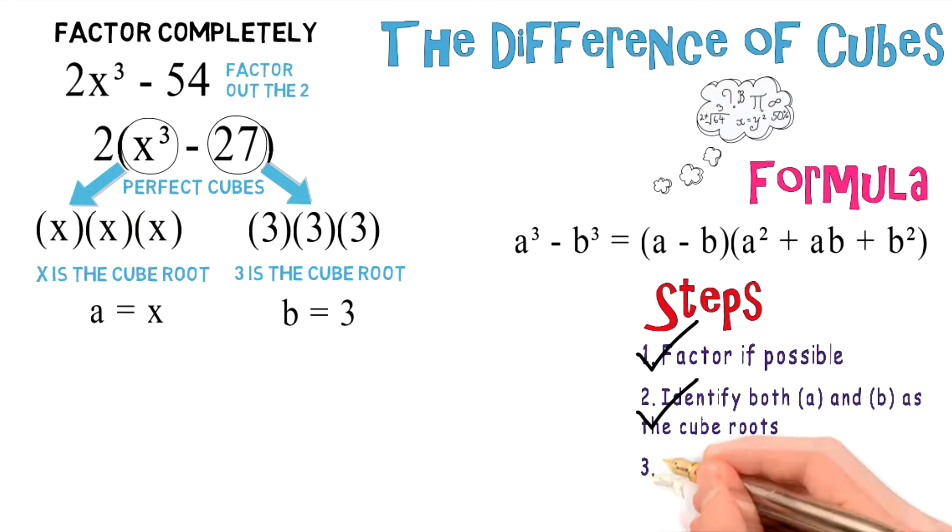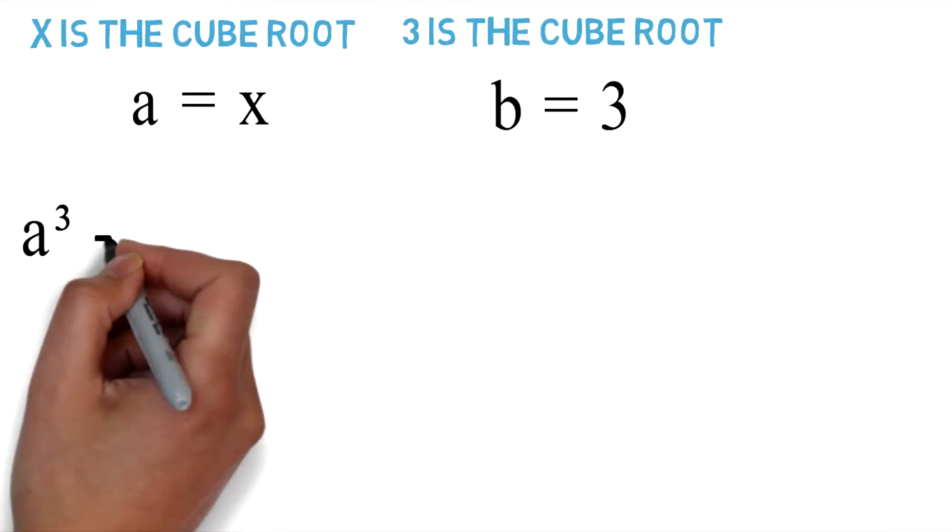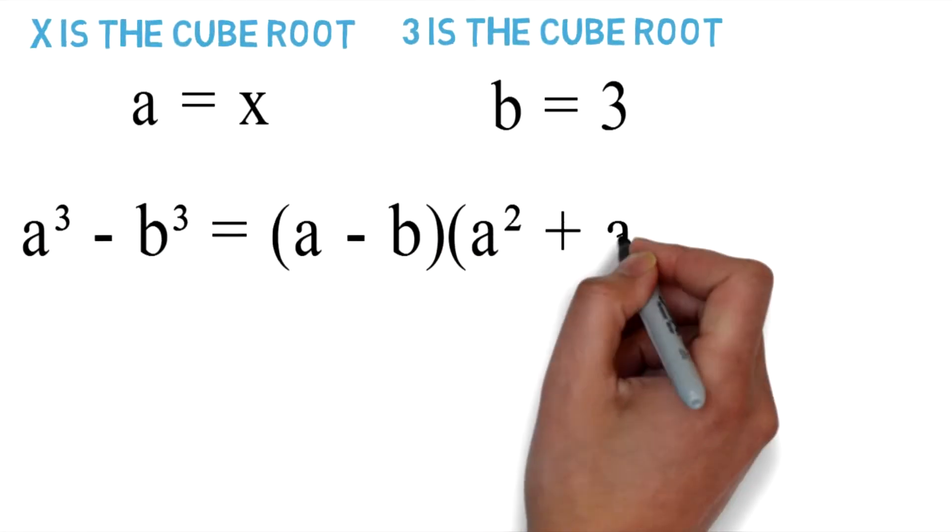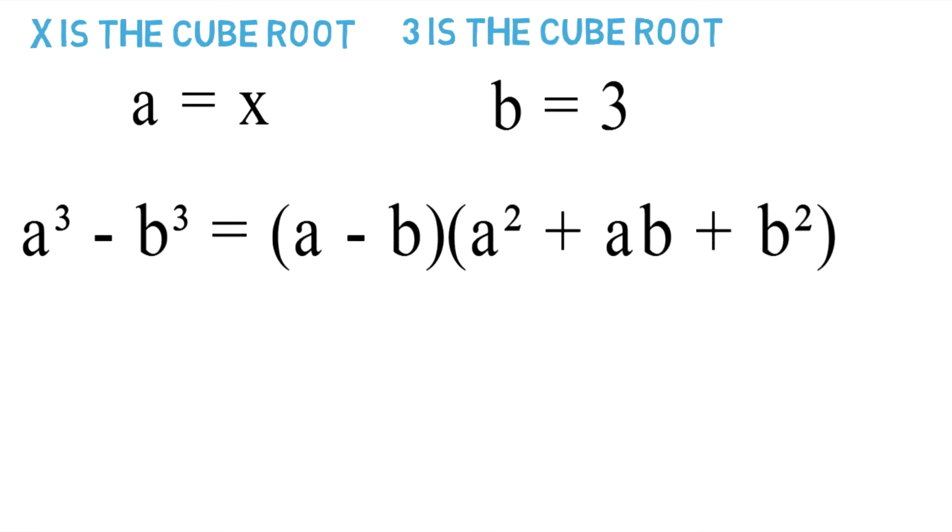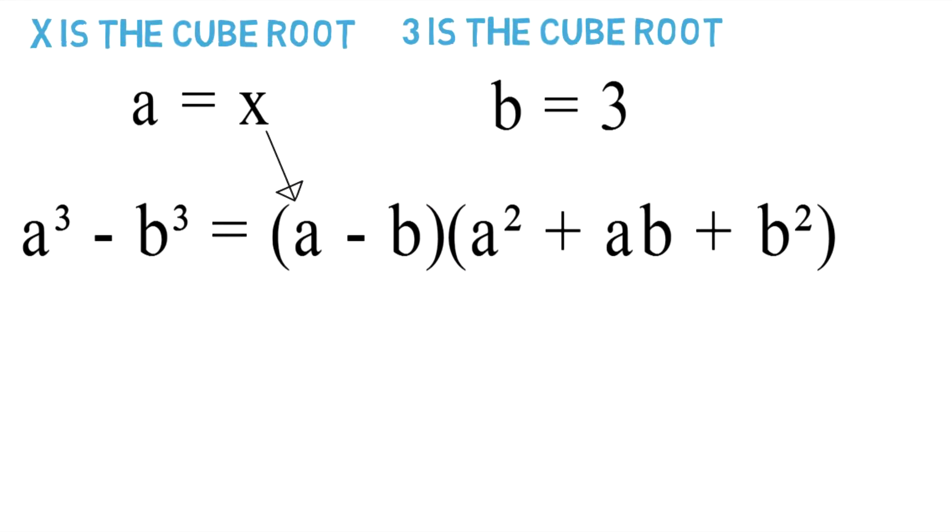Which is to plug a and b into the formula. So we're going to do that right now. Here's your formula: a to the third power minus b to the third power equals a minus b times a squared plus ab plus b squared. And we're going to take the a, plug it in wherever possible.